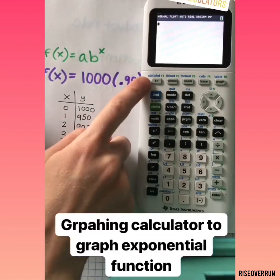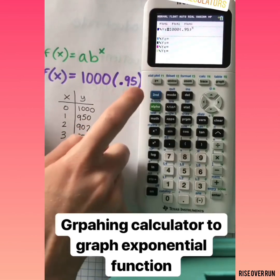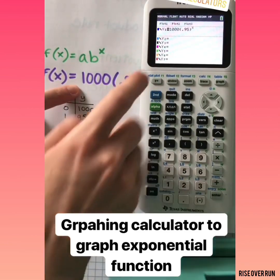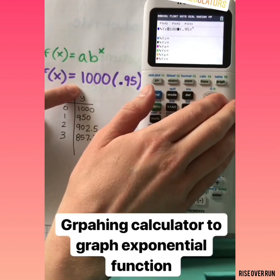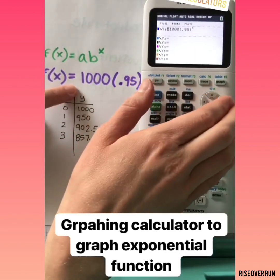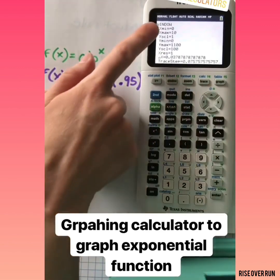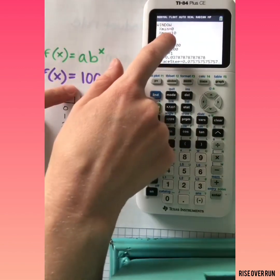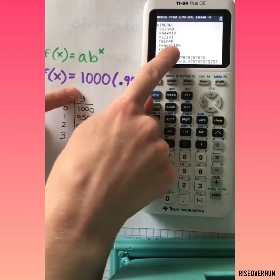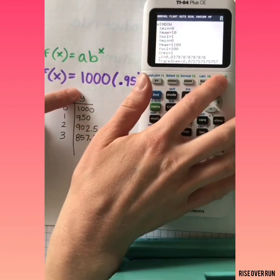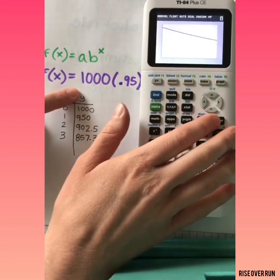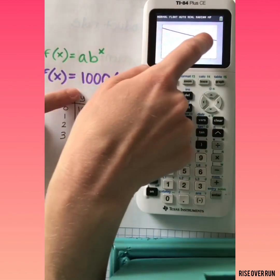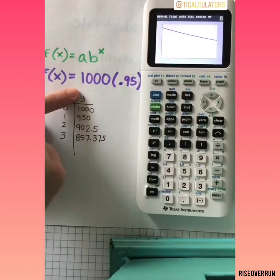On a graphing calculator, I can go to y equals, and I can enter this equation, 1,000 times 0.95 raised to the x power. And then I want to be sure my window is set where I'll be able to see what's going on here. So I've changed it from 0 to 10 and from 0 to 1,100. And then I hit graph.